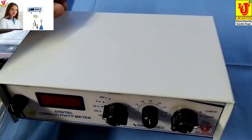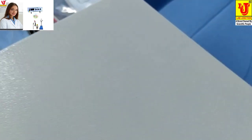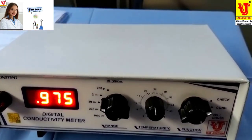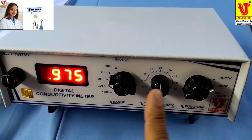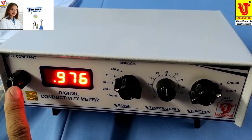I am switching on the machine. There are four controls: Function Control, Temperature Control, Range Switch, Cell Constant Knob.